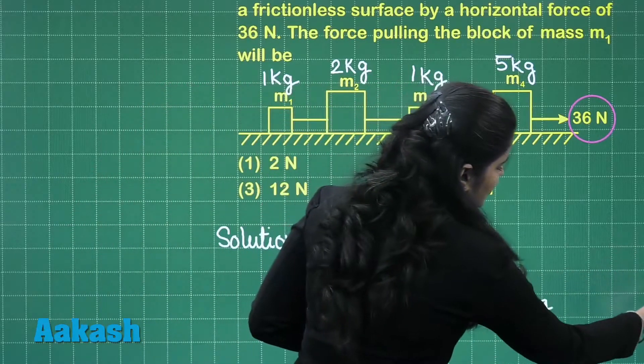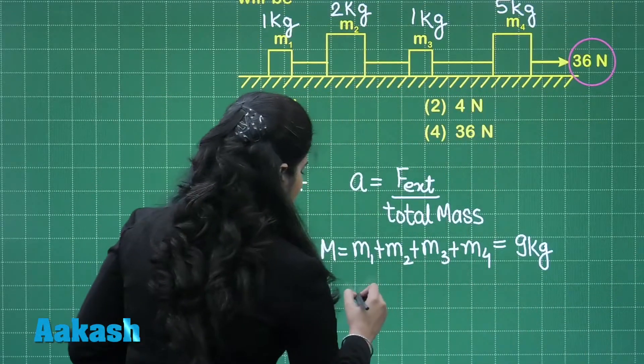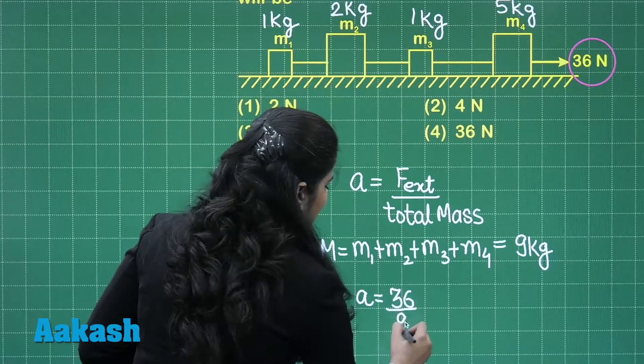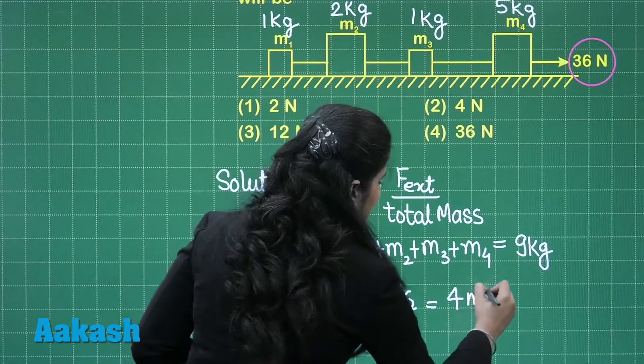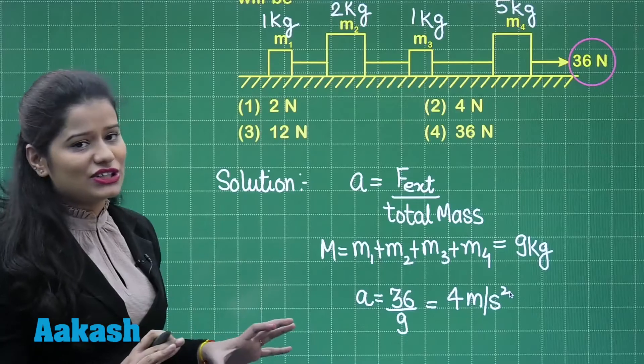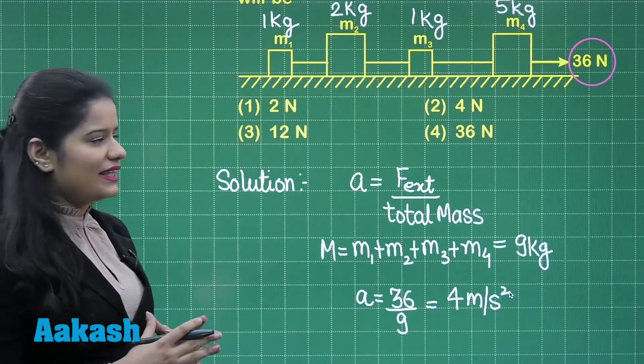Now, the acceleration will come out to be 36 divided by 9 that is 4 meter per second square. It means all these blocks are moving with this acceleration that is 4 meter per second square.